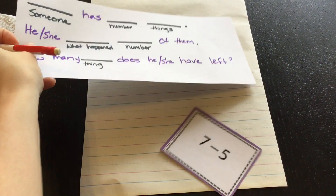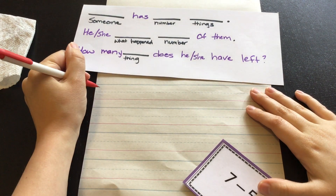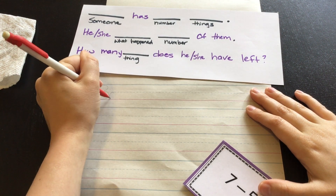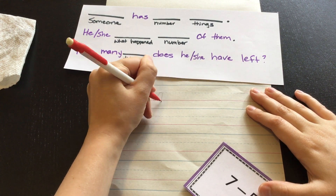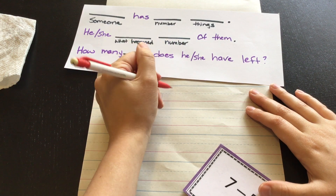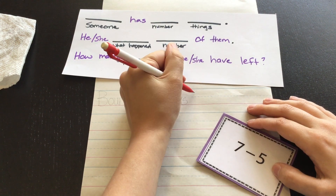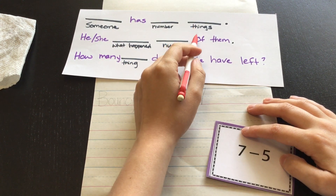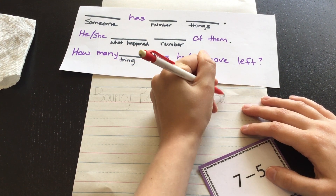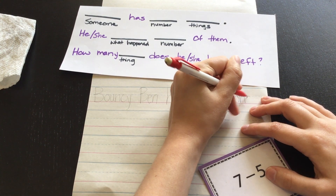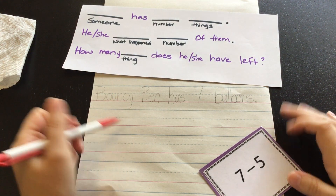I think I'm going to write my story problem this time about Bouncy Ben. So Bouncy Ben is my 'someone.' Bouncy Ben has — my first number here is seven. Something that Bouncy Ben would have seven of: balloons. Bouncy Ben has seven balloons. Bouncy Ben is a boy, so I'm going to write 'he.'